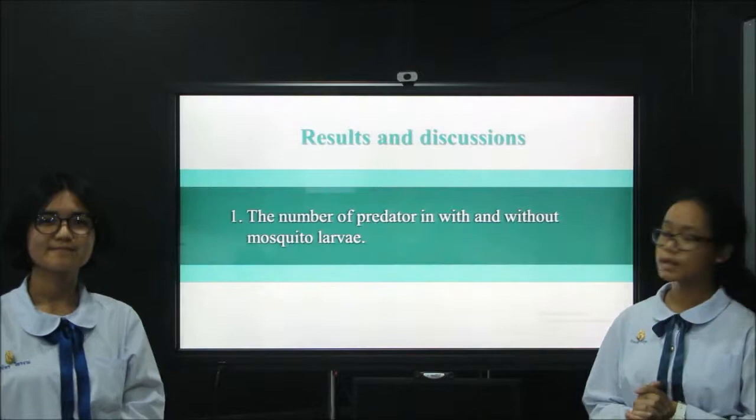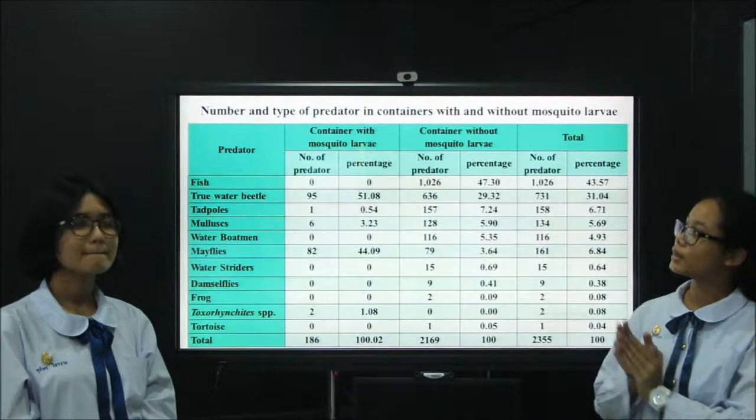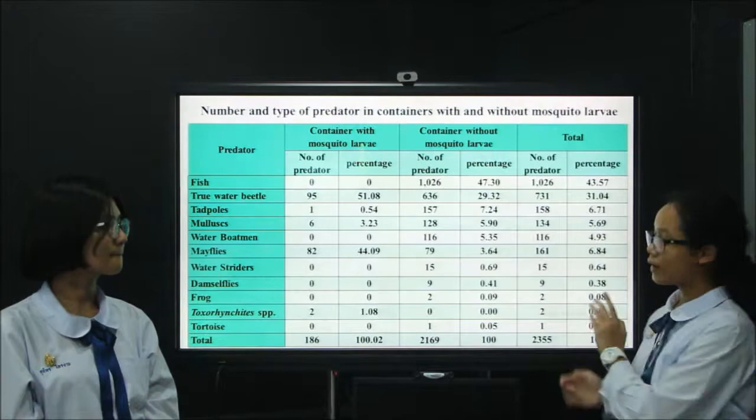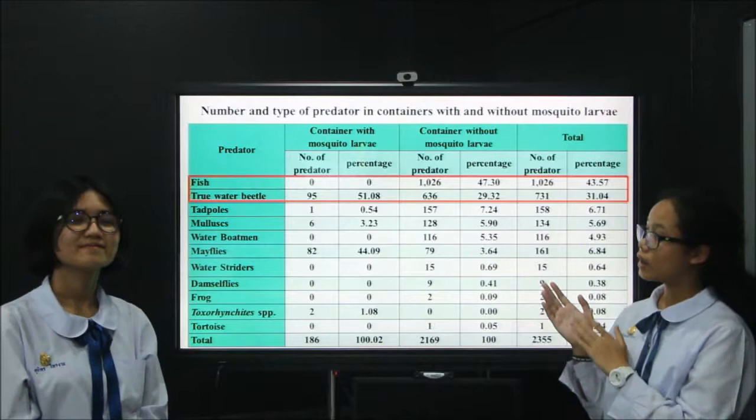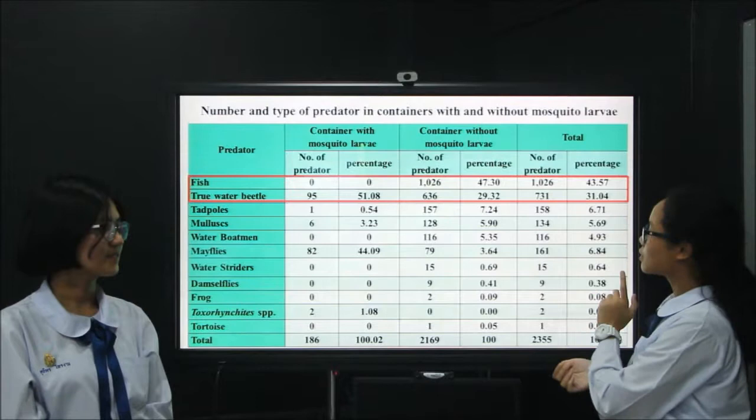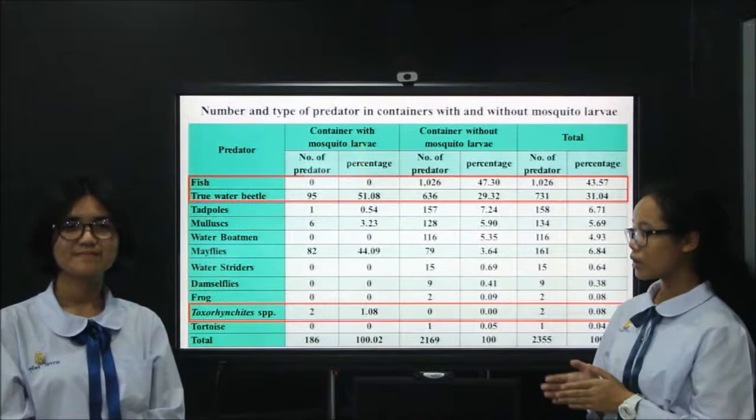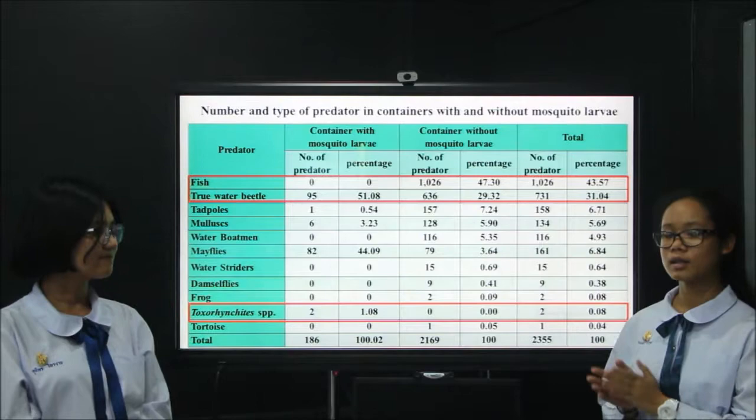In our results, we studied the number of containers with and without mosquito larvae. This table shows the number and type of predators found in containers with and without mosquito larvae. There are 11 kinds of predators. The most common was fish at about 43.57%, and the second was the diving water beetle at about 31.04%. We also found Toxorhynchites species, which is a mosquito larva that can eat other mosquito larvae.